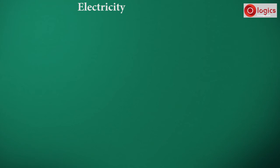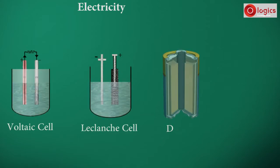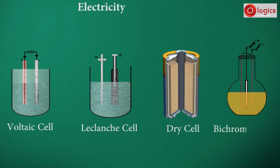Let us understand different types of primary electric cells like voltaic cell, Leclanché cell, dry cell, and bichromate cell.